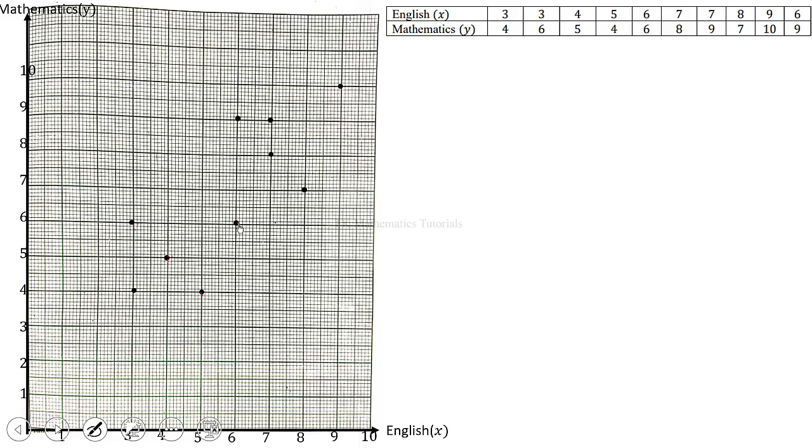Then the next thing you are going to do now is to calculate the mean of all the x values. So you add all the x values and divide by the number of values that are there. That will give us 5.8. Then the mean of y values, you add all the y values and divide by 10. That will give us 6.8.